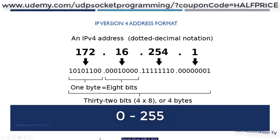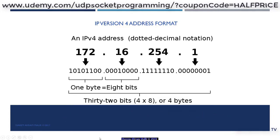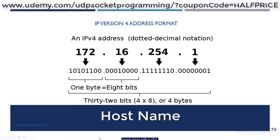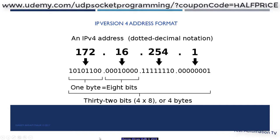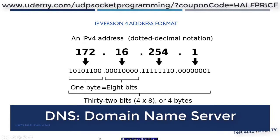When printing an IP address, the 4 numbers are separated by a dot to make reading it easier. This method of printing the IP address is called the dotted decimal notation. In many cases, a hostname is used instead of an IP address. A hostname is an alphanumeric name assigned to a machine.